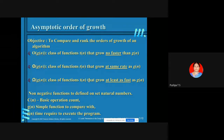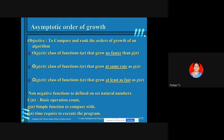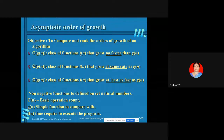Now we'll discuss asymptotic order of growth. You cannot associate any unit or constant for the runtime of an algorithm. Instead, you express it as a function of N. The objective of using asymptotic notation is to compare and rank the order of growth of an algorithm. Computer scientists and mathematicians use asymptotic notation in order to compare and rank the order of growth of algorithms.